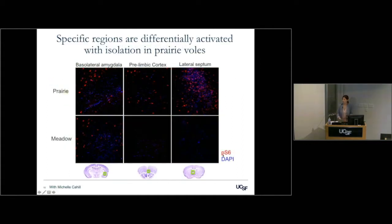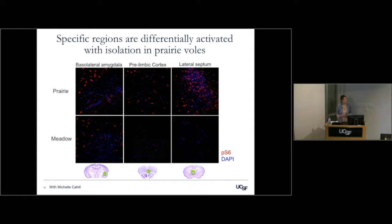But we're also able to identify regions throughout the brain that are specific to the prairie voles and specifically active under isolation — regions in the prelimbic cortex and the lateral septum that are active only in the prairie voles. What this tells us is these brain regions are not only registering the isolation, but the meaning of that: the loss of the attachment.